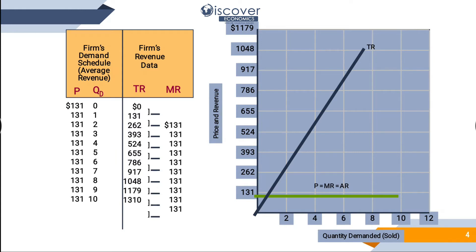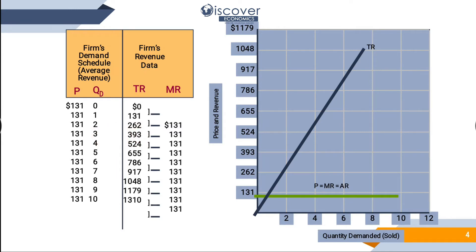Average revenue equals total revenue divided by quantity. For example, total revenue 262 divided by quantity 2 equals 131. Total revenue 393 divided by quantity 3 equals 131 again.